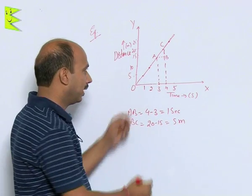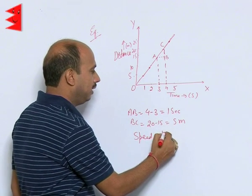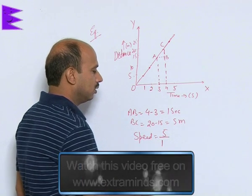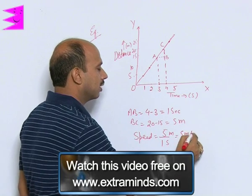Now, we can write speed is equal to 5 divided by 1 meter that is second is equal to 5 meter per second.